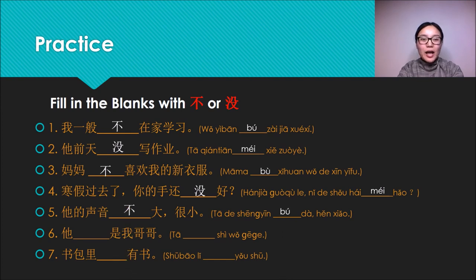Next one, we use 不. 他的声音不大,很小 (his voice isn't high, but very low). So this one is about fact and quality, so we use 不 to negate.